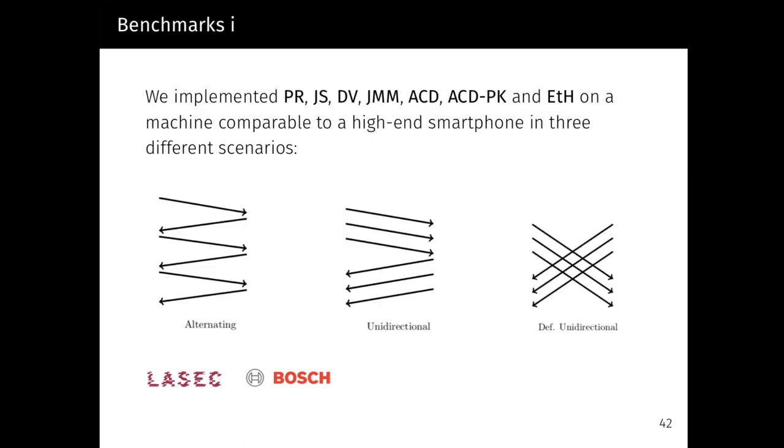For the last part of this presentation, we move on to the benchmarks. We implemented the discussed protocols on a machine comparable to a high-end smartphone in three different scenarios. First, we looked at alternating traffic: the users A and B take alternating turns in sending and receiving messages. Then we looked at unidirectional traffic: first, user A sends N messages that are received by user B, and then user B proceeds to send his share of N messages. And finally, we looked at something similar called deferred unidirectional traffic, which starts off by A sending N messages, but before B receives those messages, he sends his share of messages.